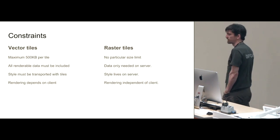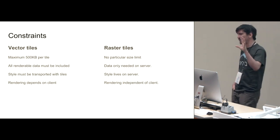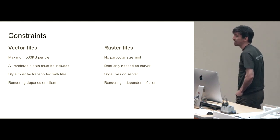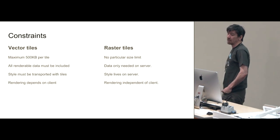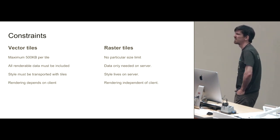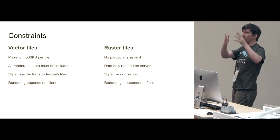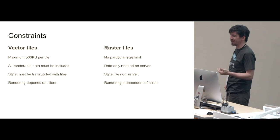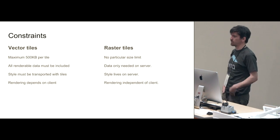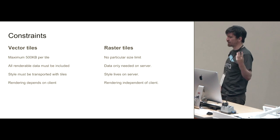The constraints when working with vector tiles — this first constraint turns out to be the big one. If we're working in the Mapbox ecosystem, we're only allowed 500 kilobytes per tile, and this is a problem that just never really occurs in raster tiles. With raster tiles it's more about how much information you can visually cram into a certain number of pixels; we don't really worry about tile size. Whereas trying to cram all the data you need into a vector tile tends to be something you wrestle with all the time.